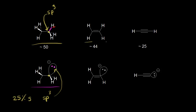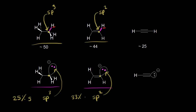Moving on to ethene or ethylene — this carbon is sp2 hybridized. If ethene donates this proton, the electrons in magenta are left behind. This is the conjugate base to ethene, and this carbon is sp2 hybridized. The lone pair of electrons occupy an sp2 hybrid orbital, which has approximately 33% s character.